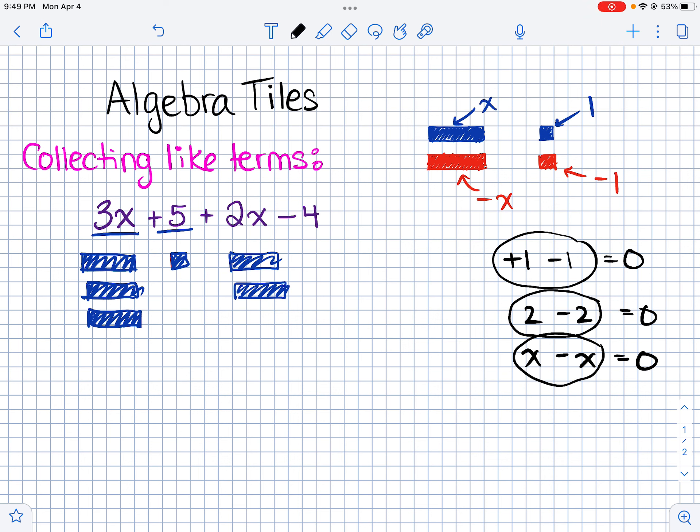So let me just write down what we have left. So we have 1, 2, 3, 4, 5 X tiles, which means we have 5X. And then 1 single, so plus 1. So this expression right here is equal to 5X plus 1. So that's how we collect like terms using algebra tiles.